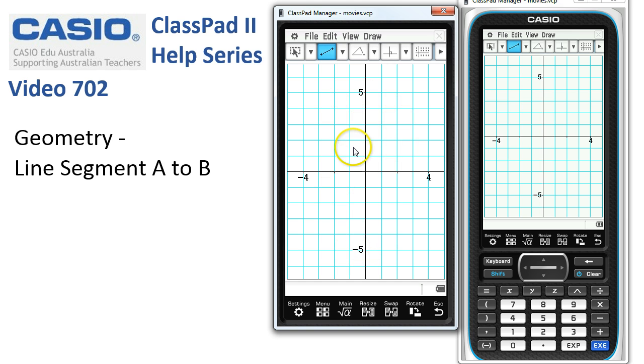It means that if I tap somewhere down close to negative one, negative three, about here, you can see ClassPad's picked up that I want to draw the line from negative one, three. I've released the point there.